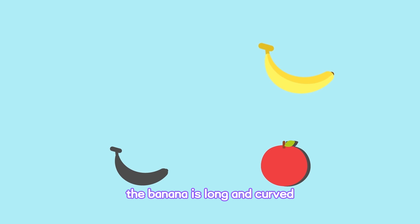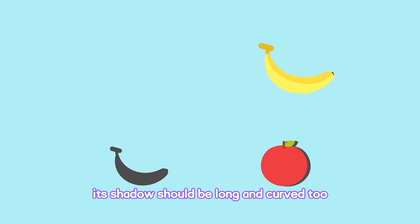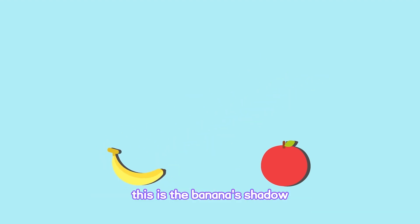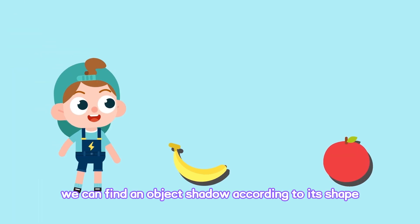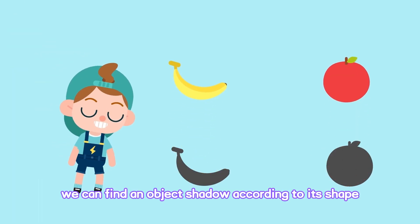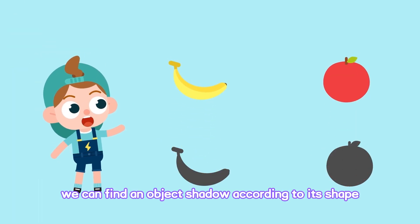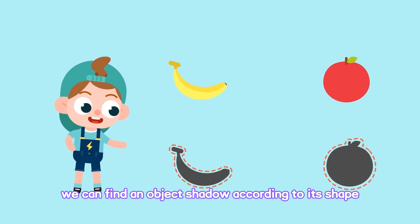The banana is long and curved. Its shadow should be long and curved too. This is the banana's shadow. We can find an object's shadow according to its shape.